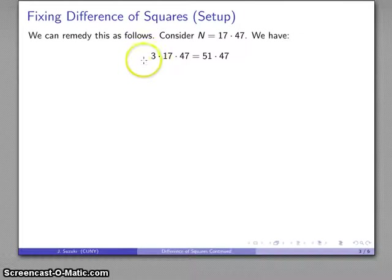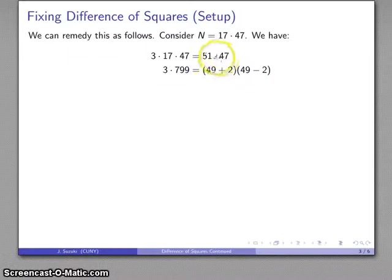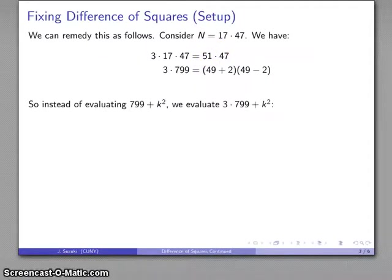Now, over on the left-hand side, I have 3 times 799. And over on the right-hand side, I have something that is the product of two numbers that are very close together. And so, rearranging things a little bit, if I want to evaluate 799 plus k squared, I have to go up to k equals 15 before I can find a perfect square. But instead, if I evaluate 3 times 799, I only have to go as far as k equals 2 before I can find my perfect square.